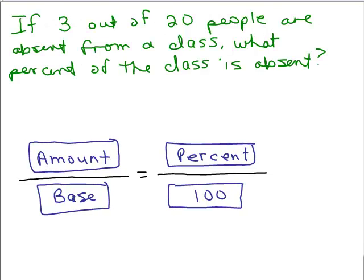So here's this problem. If 3 out of 20 people are absent from a class, what percent of the class is absent? All right, so what would the amount be and what would the base be? A lot of people have trouble figuring that out. And I always look for the word of, and it's the number after that that will usually always be the base. In other words, the base is the total number or the normal amount of students in the class. So our base here will be 20.